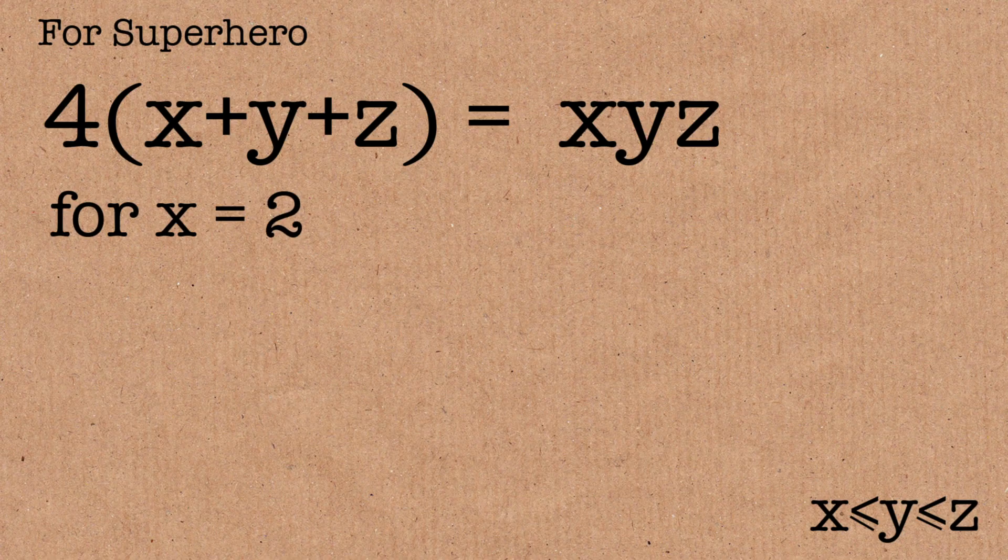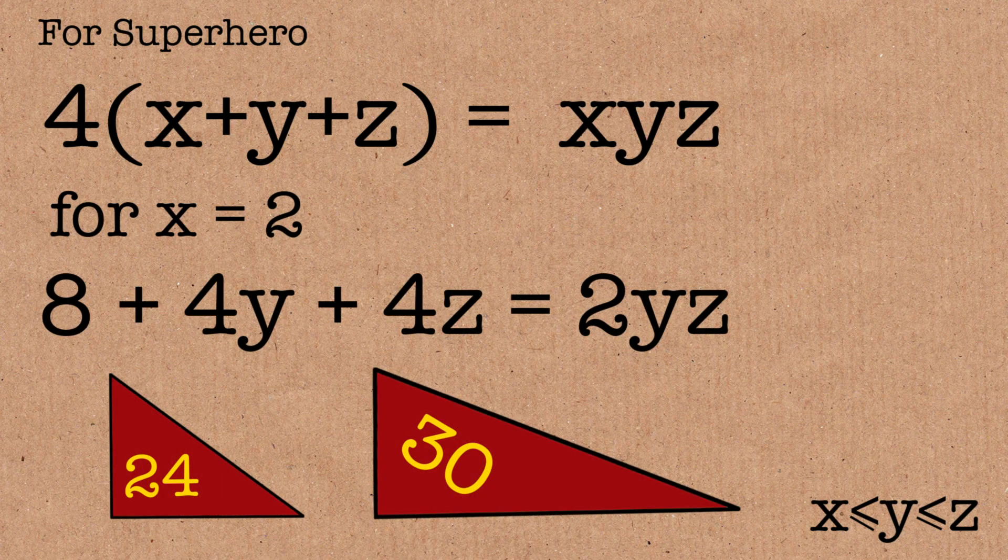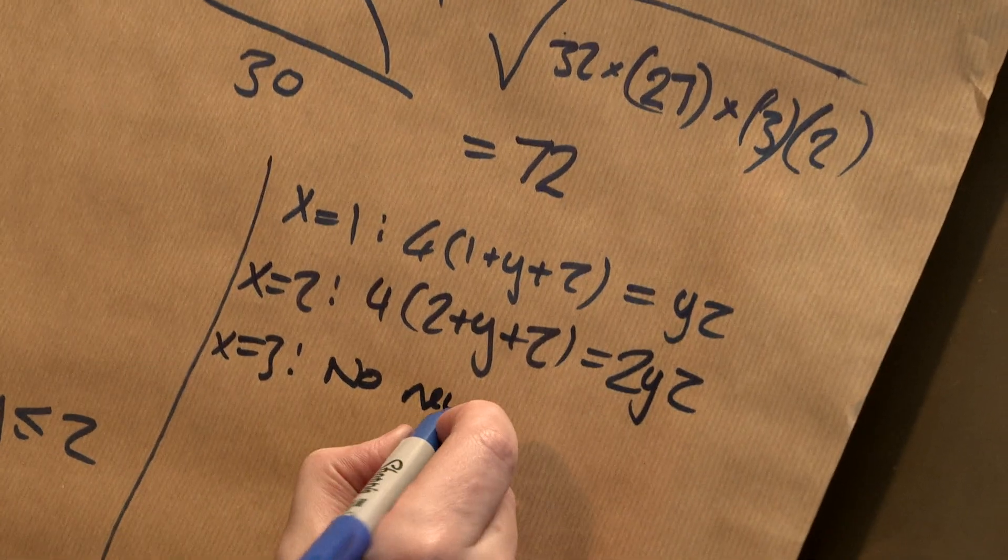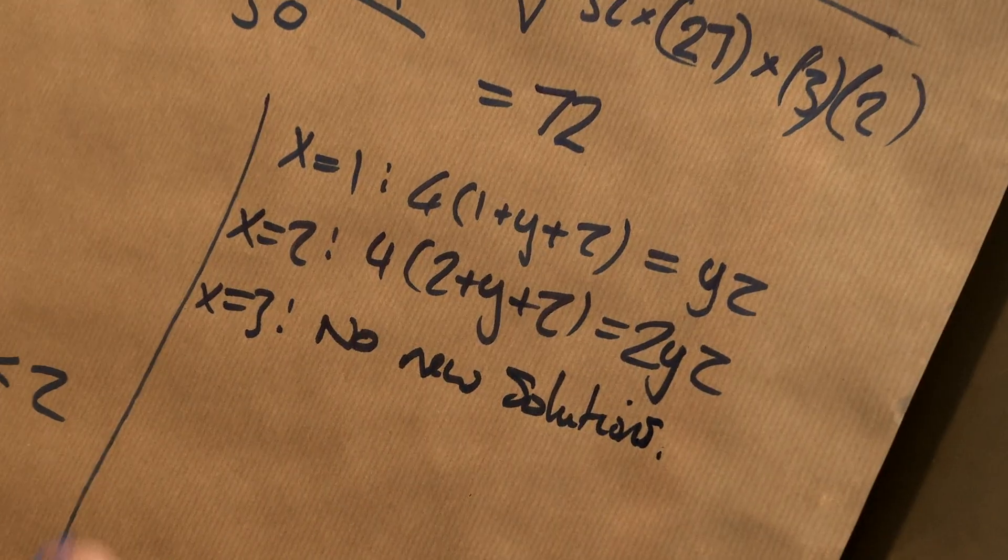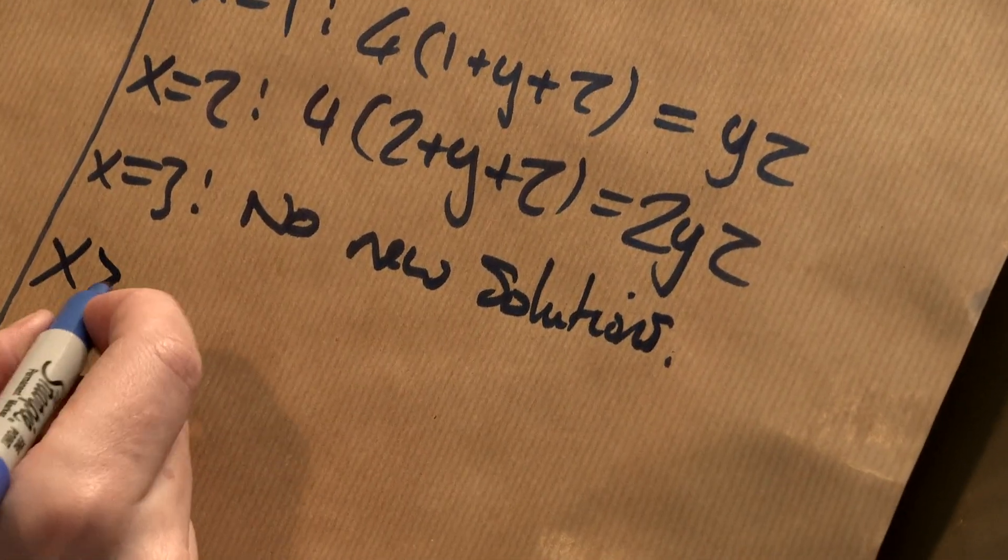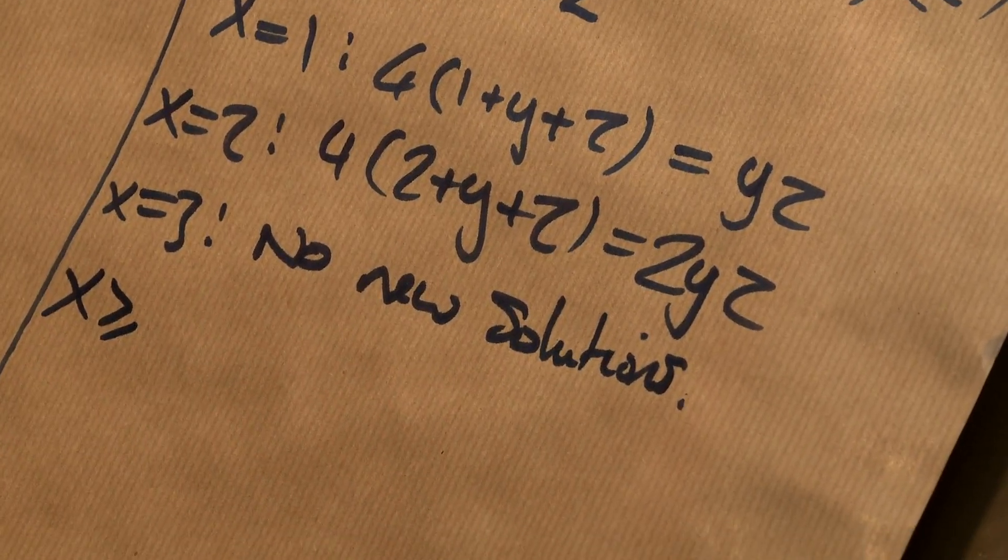If you have x equals 2, you get your two right-angled triangles. If x equals 3, you get no new solutions. And if you are looking at bigger numbers, you'll find it's impossible.